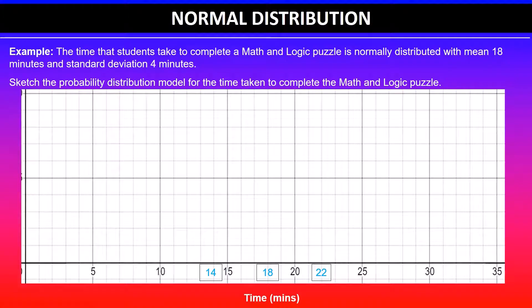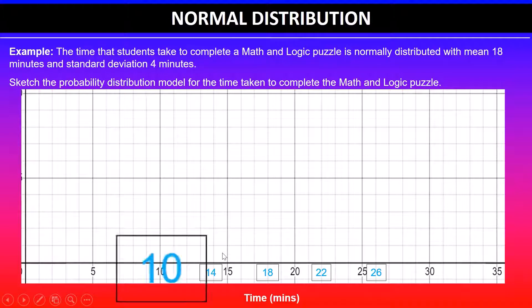Using this logic we can find the values within the second standard deviation. So 22 plus 4 gives me 26, and 14 take away 4 is 10. That's within the second standard deviation.